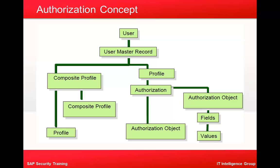Here is a hierarchical chart showing how the user has a user master record, and each user master record consists of a profile, or multiple profiles, or a combination of profiles and composite profiles. Each profile has authorizations and authorization objects, and each authorization object has fields and values. Authorization means permission to perform a particular function in the SAP system, achieved by assigning authorization profiles to users.